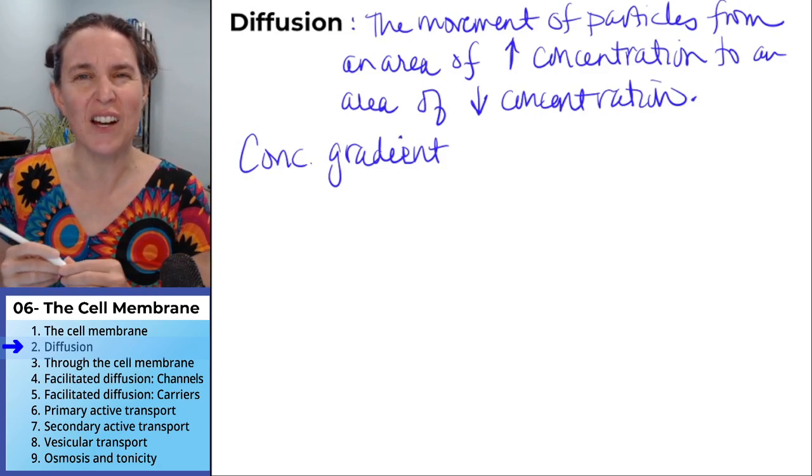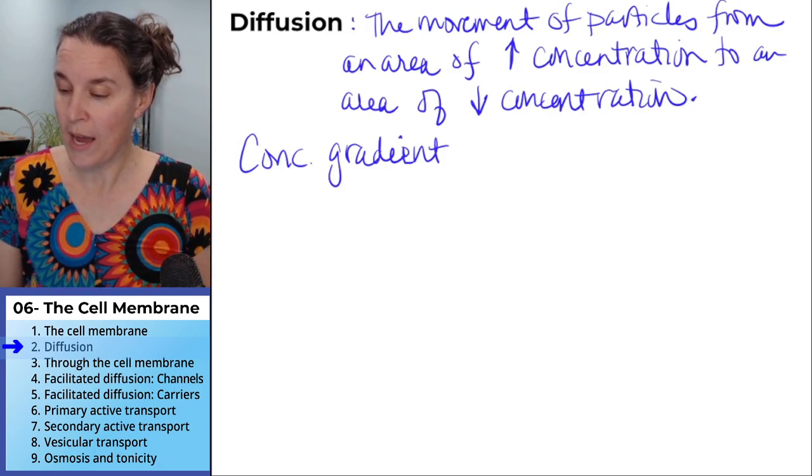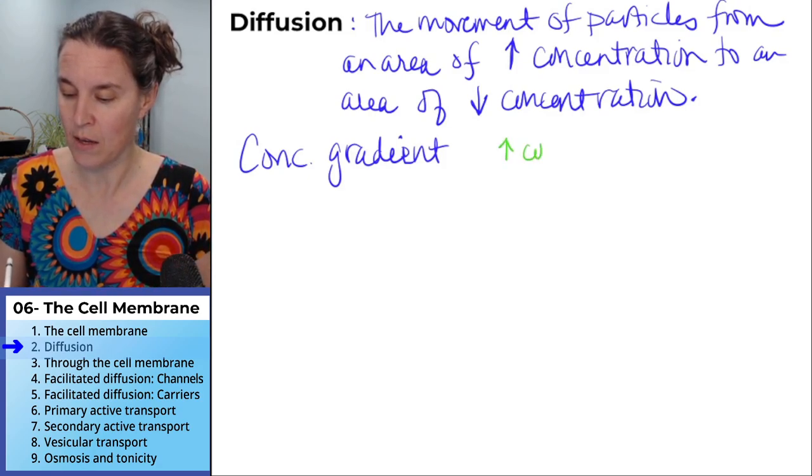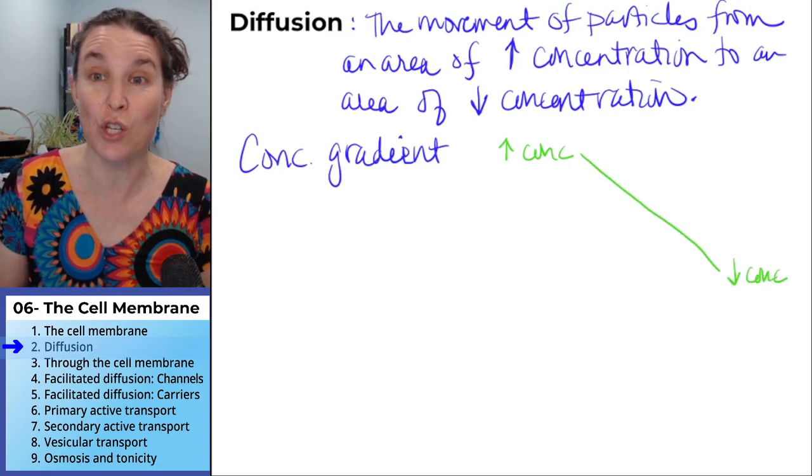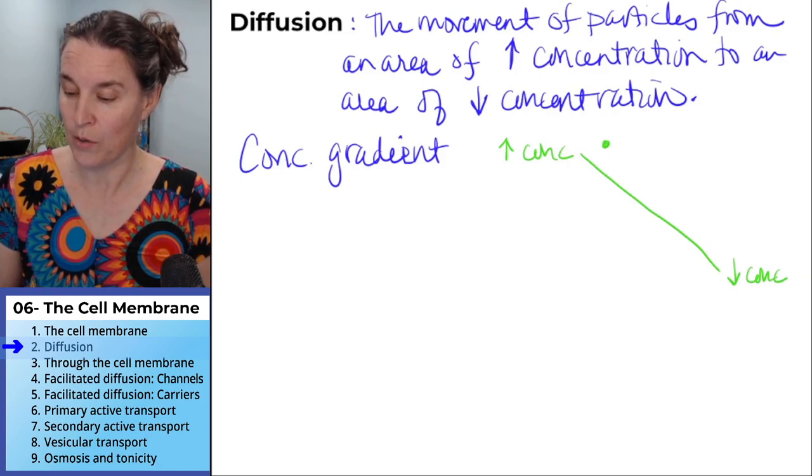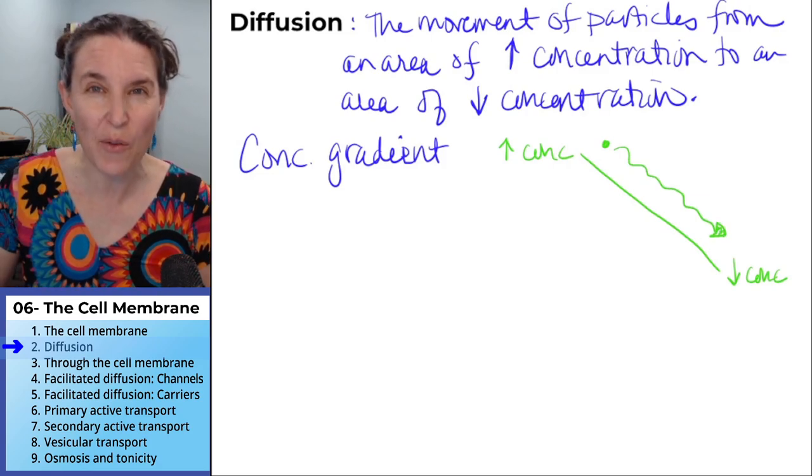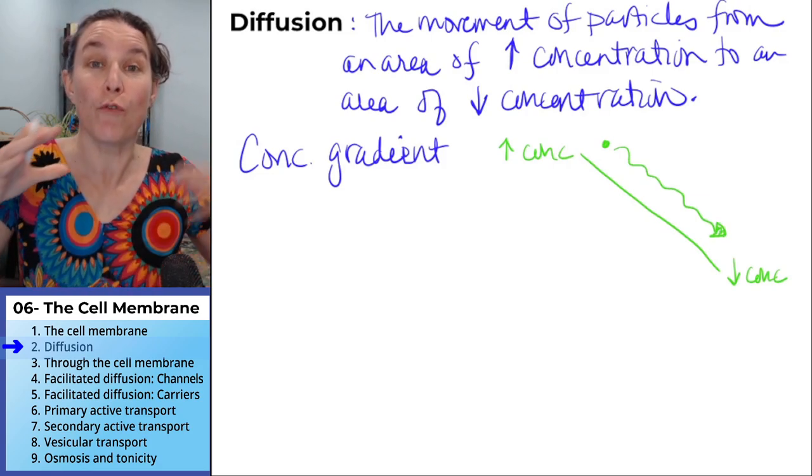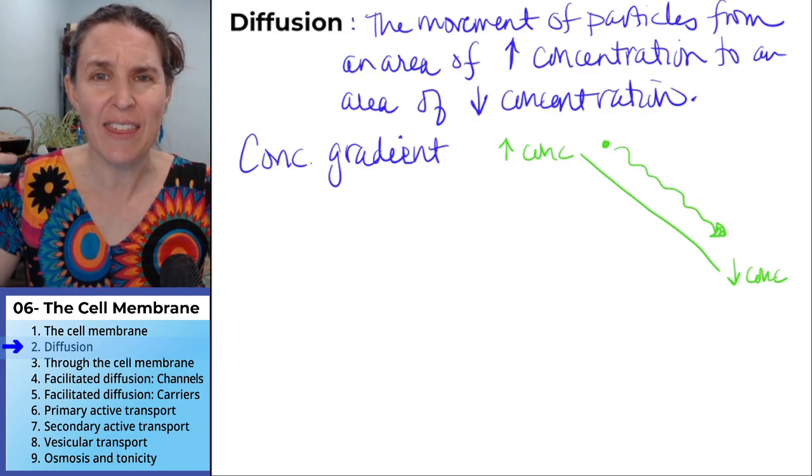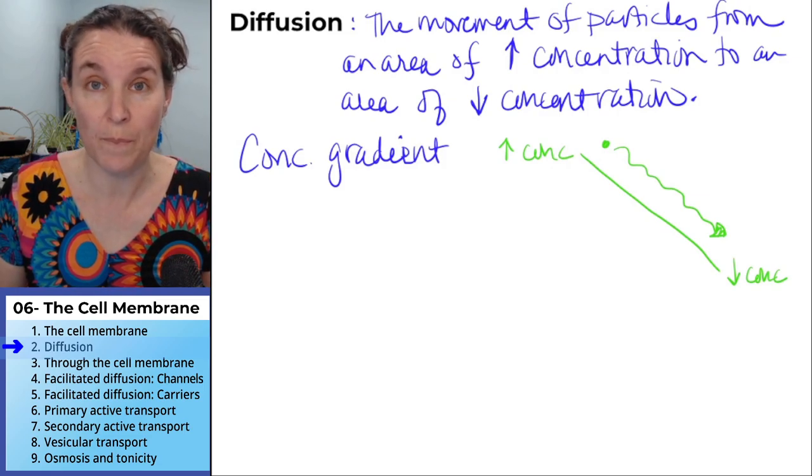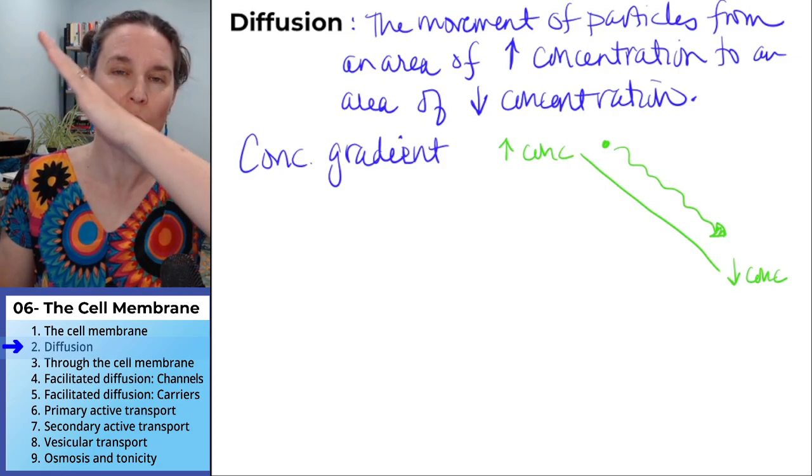I think of the concentration gradient as, I literally think of it as a hill. So we have an area of high concentration and an area of low concentration, and if you just have a little particle, that particle is going to move down the concentration gradient from the area of high concentration to the area of low concentration. I think that this is an intuitive idea. This makes sense, especially if you think of a concentration gradient as a hill.